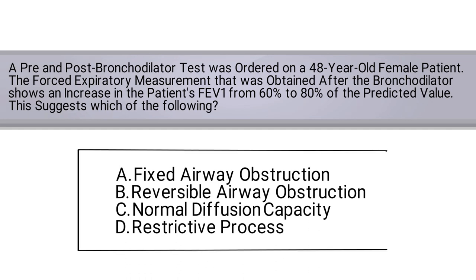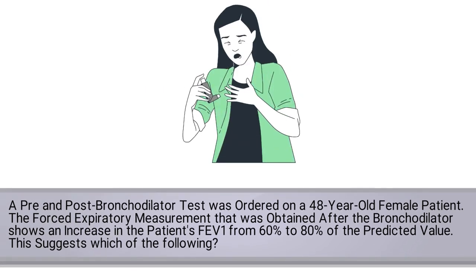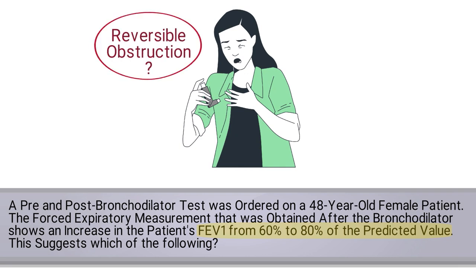The information given in the question suggests that the patient's airway obstruction was somewhat relieved after the bronchodilator was given. We know this because their FEV1 increased from 60 to 80 percent of the predicted value. But was the increase enough to classify as a reversible obstruction?